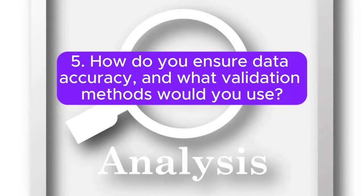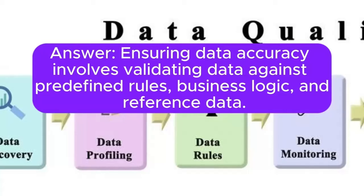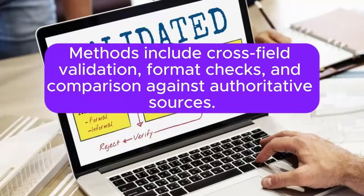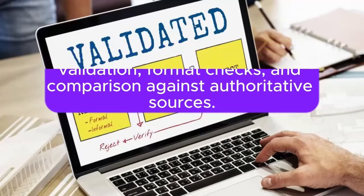5. How do you ensure data accuracy, and what validation methods would you use? Answer: Ensuring data accuracy involves validating data against predefined rules, business logic, and reference data. Methods include cross-field validation, format checks, and comparison against authoritative sources.